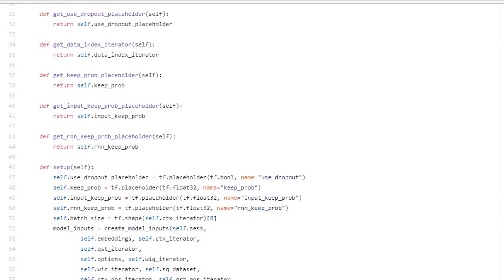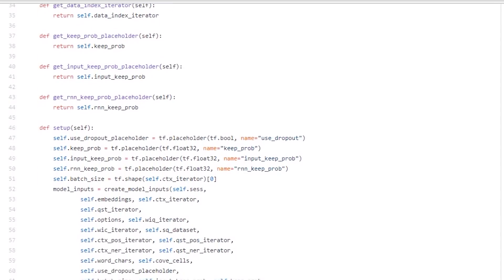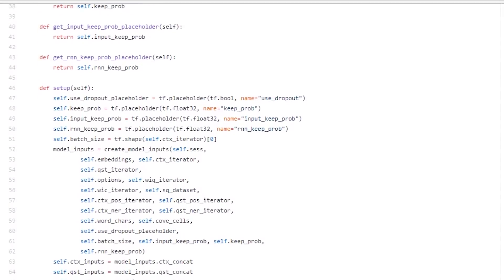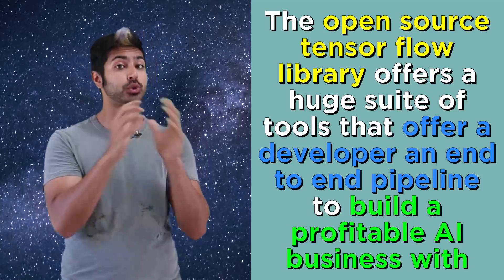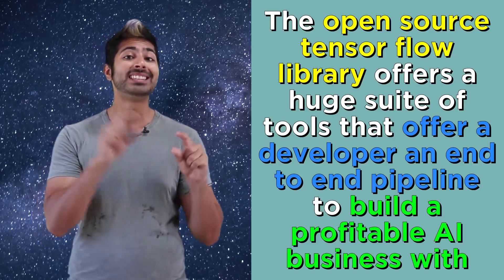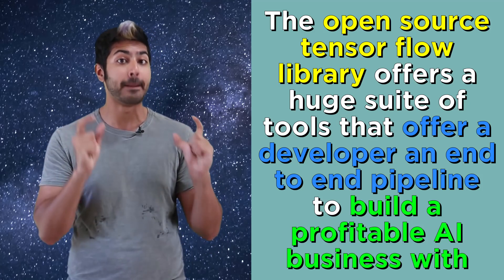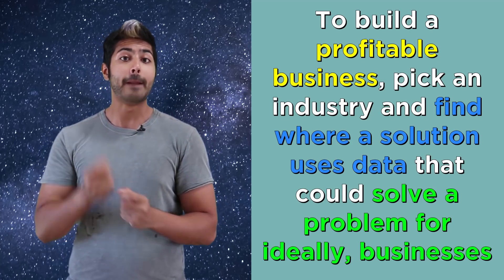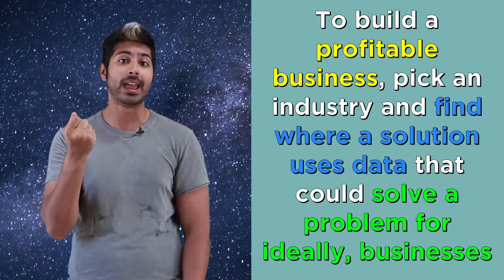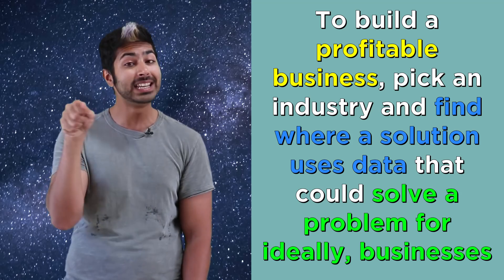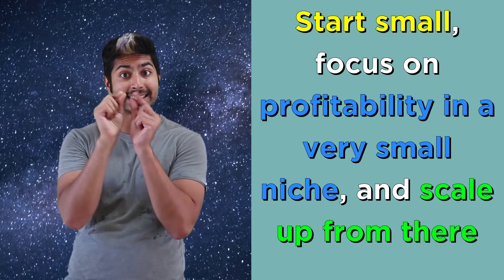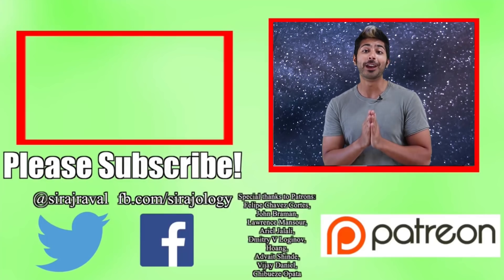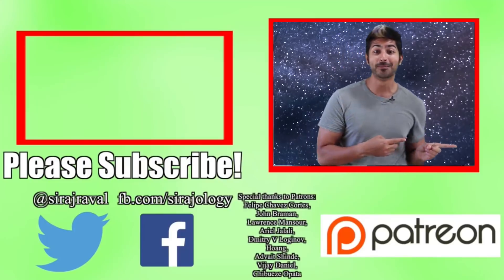We can sell our solution to small online schools that need more support for their students for our initial clients and scale up from there, adding new features like automated grading and even full-on AI teachers. There are three things to remember from this video: the open source TensorFlow library offers a huge suite of tools that offer developers an end-to-end pipeline to build profitable AI businesses. To build a profitable business, pick an industry and find where a solution that uses data could solve a problem for ideally other businesses and start small. Focus on profitability in a very small niche and scale up from there. Please subscribe for more programming videos and for now, I've got to grow a business. So thanks for watching.